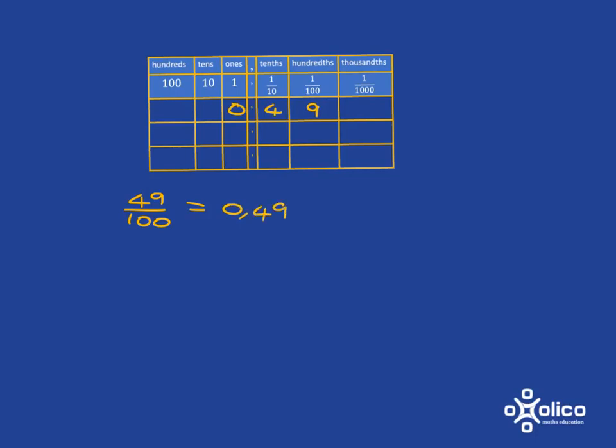What if instead we had, for example, 29 over 1,000? In this case, we know we're dealing with thousandths. So that 9 must go into the thousandths place.